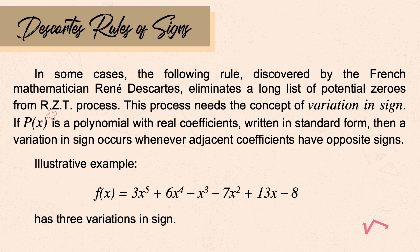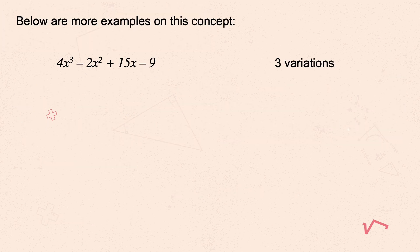Let's have a few examples. In 4x cubed minus 2x squared plus 15x minus 9, we have 3 variations. Looking at the symbols: from positive 4x cubed to negative 2x squared, that's the first. From negative 2x squared to positive 15x, that's the second. From positive 15x to negative 9, that's the third. So we have 3 variations here.